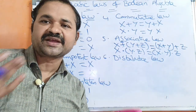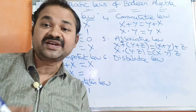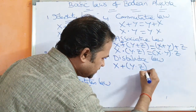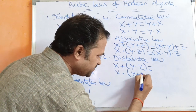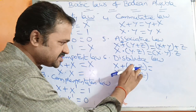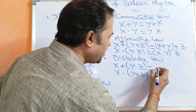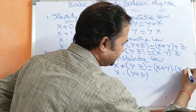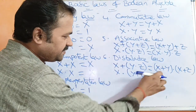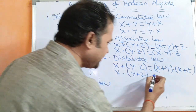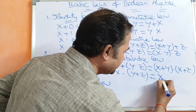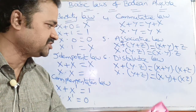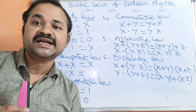The next law is distributive law, where the two operators are different symbols. x plus (y dot z) equals (x plus y) dot (x plus z). Likewise, x dot (y plus z) equals x dot y plus x dot z. These two rules come under distributive law.